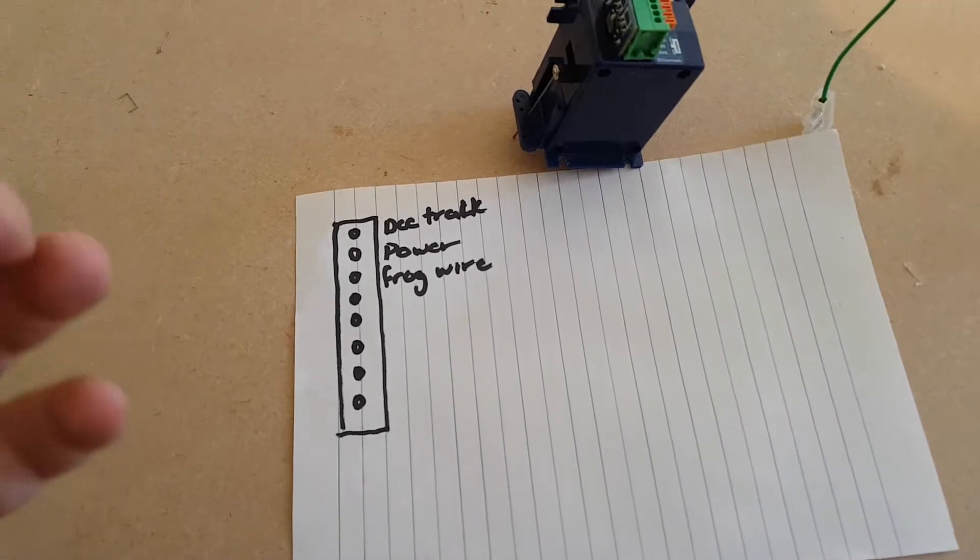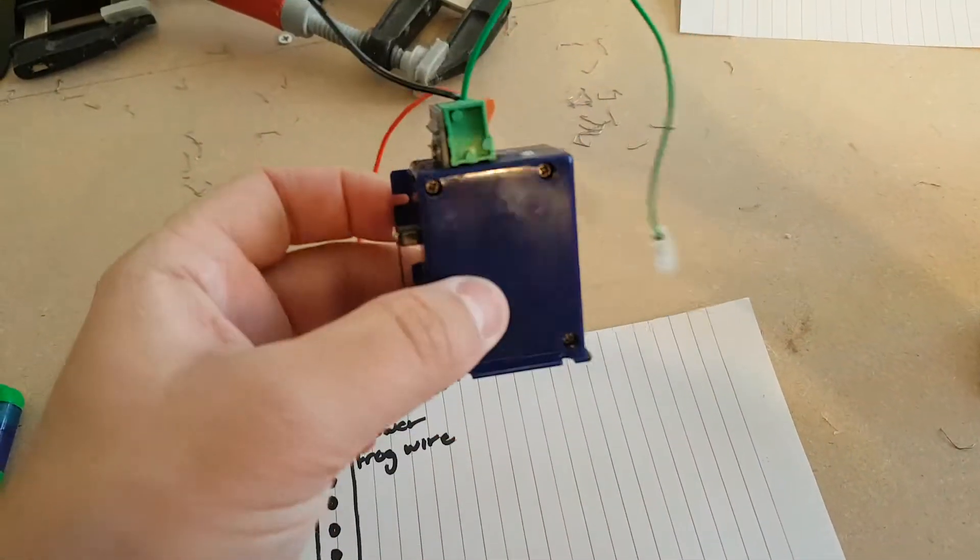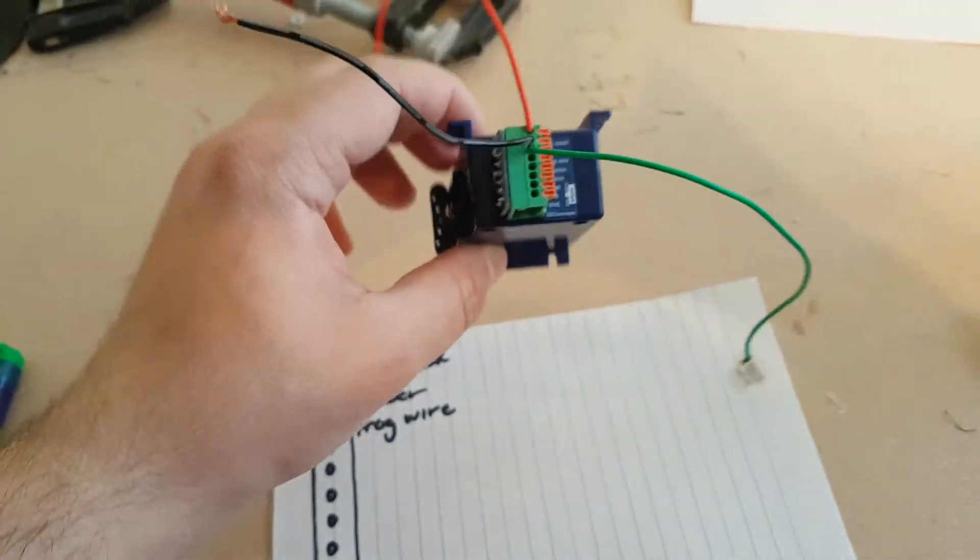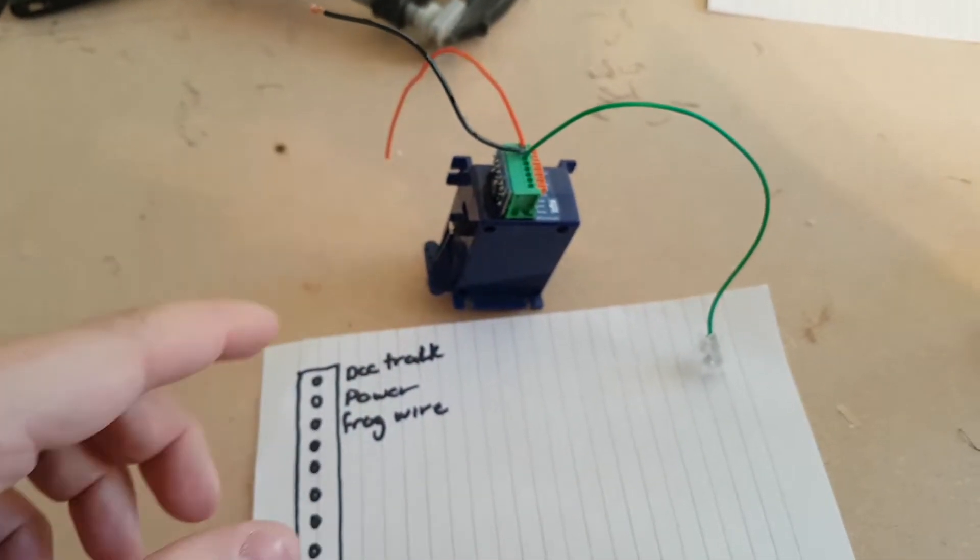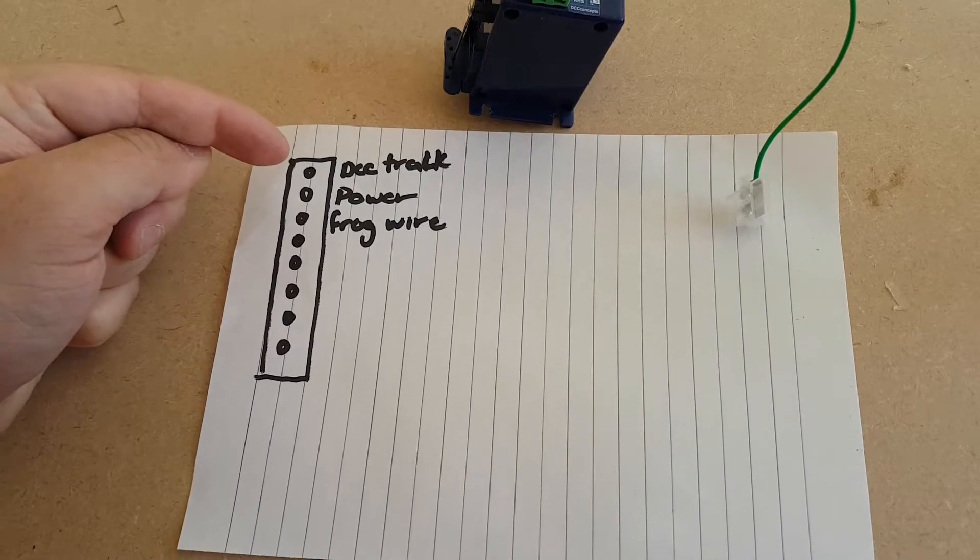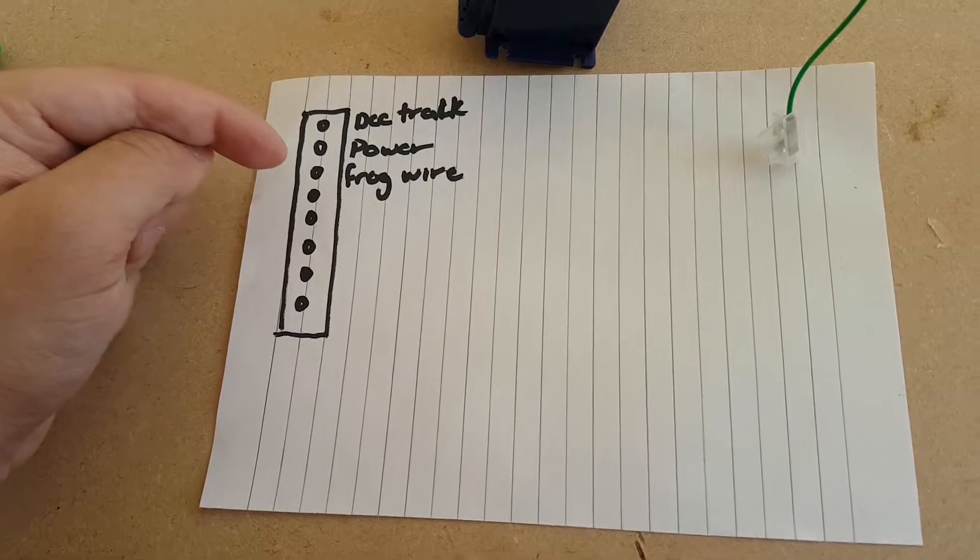the three wires I use on my Pico, my cobalt slow motor digital IP point motors - I only use three of the wires on it, which are my DCC track input, my power input, and the frog wire.